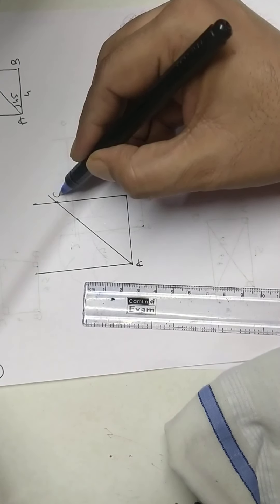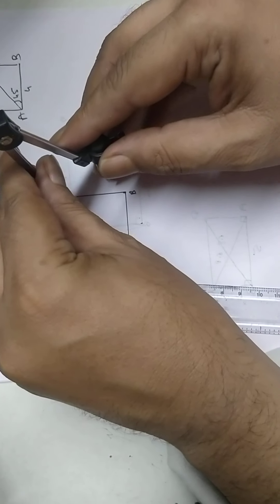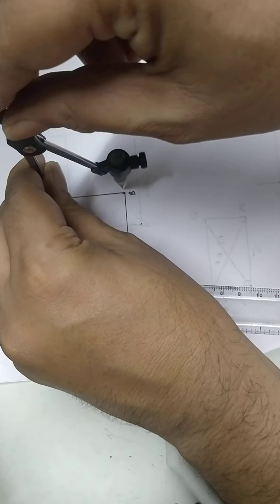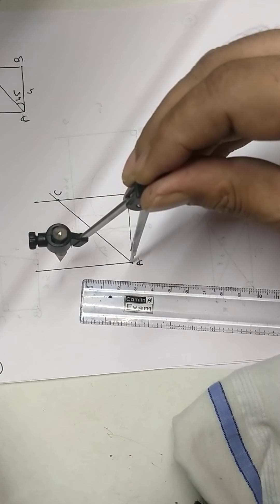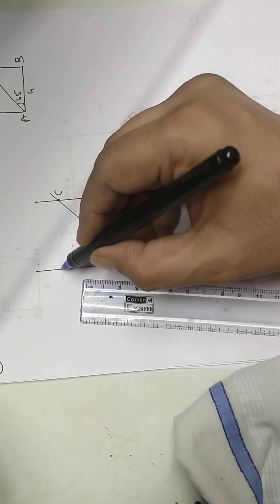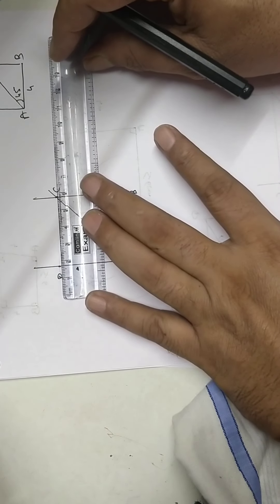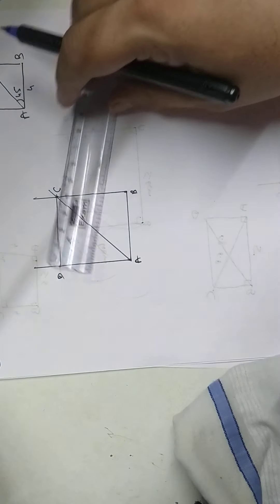This is my point C. Opposite sides are equal. So measure BC. Keep at A. Cut. I got point D. Hence, ABCD is my required rectangle.